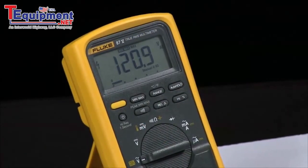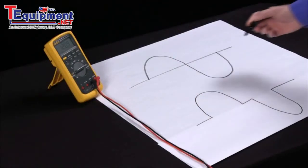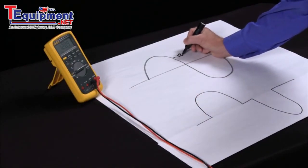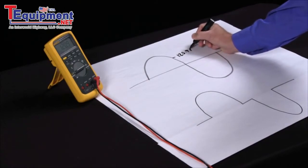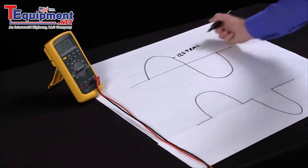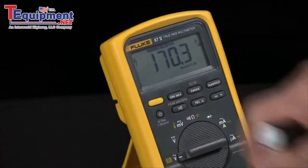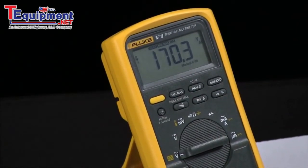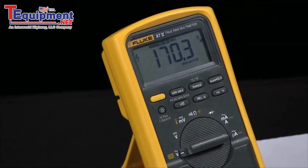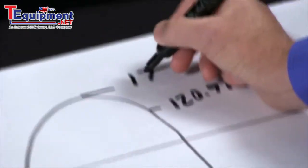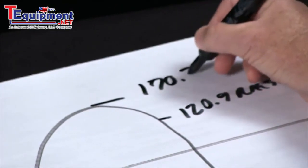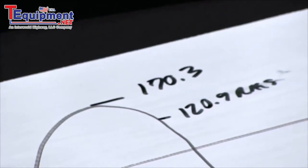If I look at a sine wave, right now I'm measuring the RMS value, which is 120.9 RMS. By hitting the min-max and then the peak min-max, I put the meter into peak min-max mode, which shows me we have a peak of 170.3.